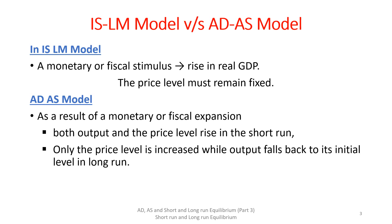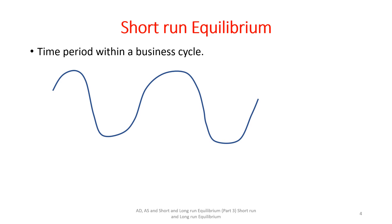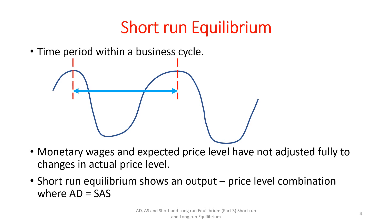It is appropriate to revise the concepts of short and long-run from a macroeconomic point of view. In macroeconomics, the short-run refers to a time period within a business cycle, i.e., a time period within which a business cycle has not completed all its four phases. This is shown in the diagram. In short-run, the monetary wages and expected price level have not adjusted fully to changes in actual price level.